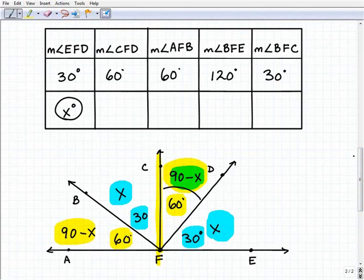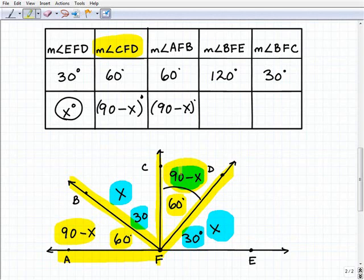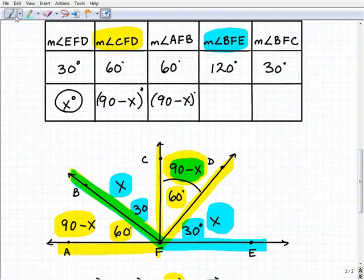Now we need to go back and look at our chart. Measure of angle CFD, that would be 90 minus X degrees. The measure of AFB is also 90 minus X.